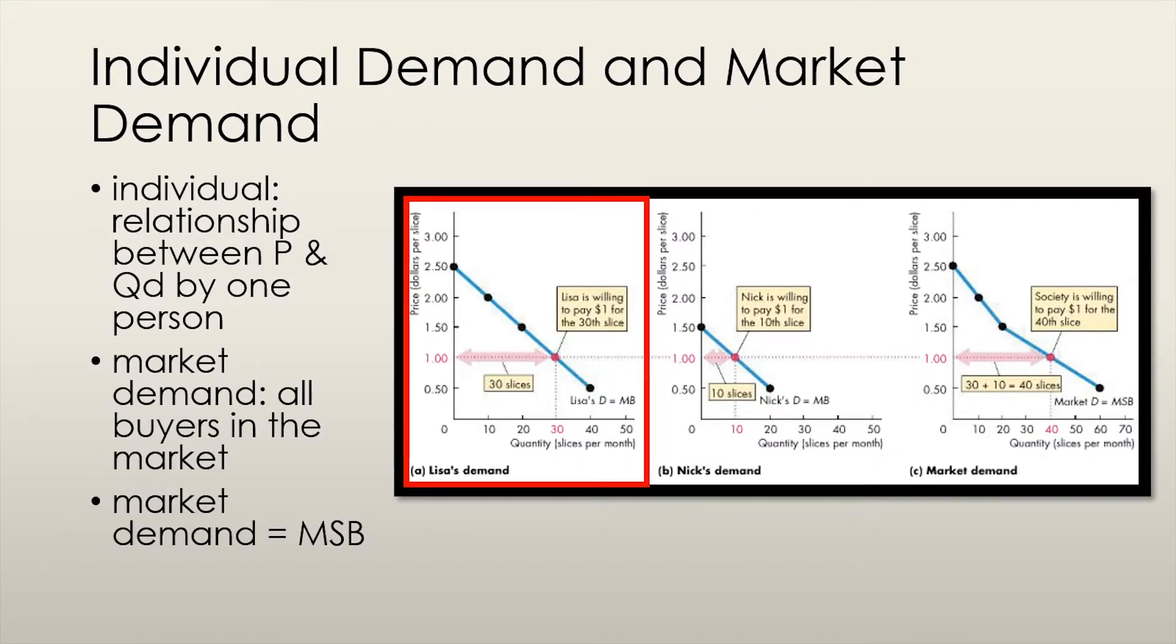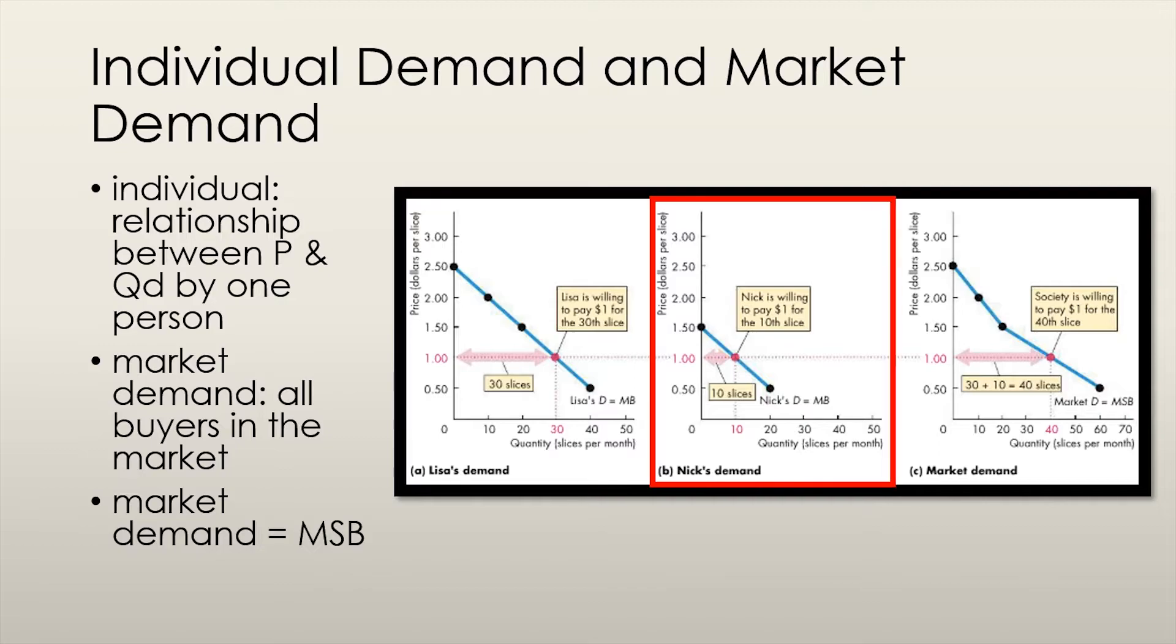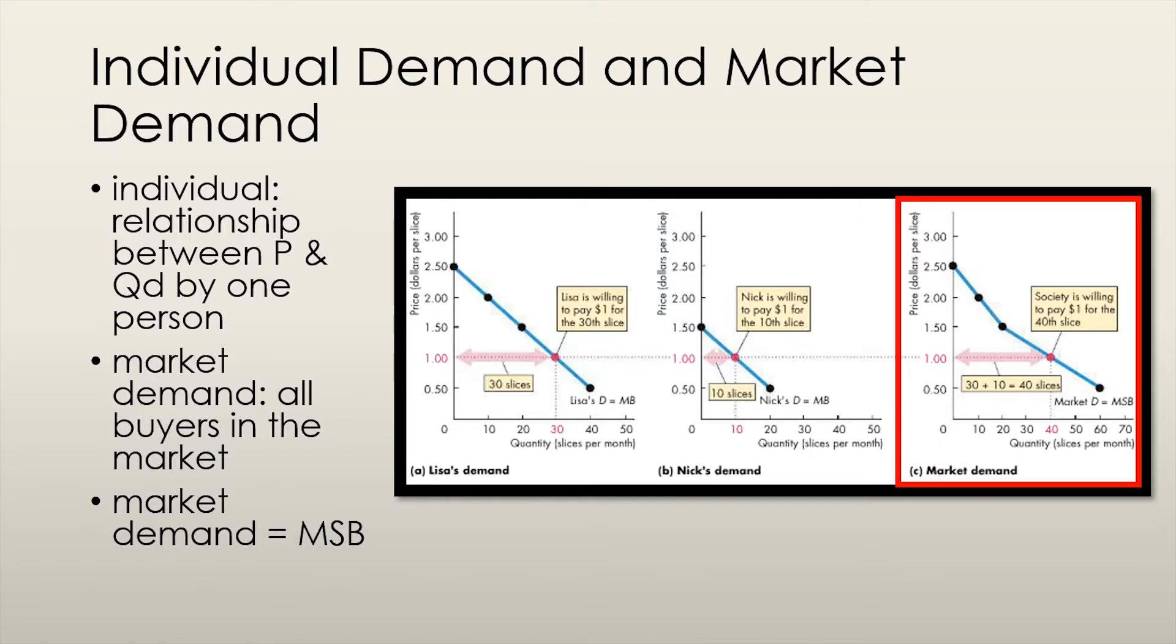Individual demand refers to the relationship between price and quantity demanded of a good or service by one person. Take the pizza example on the screen. Assume that this is a two-person market for pizza. Every point on the highlighted demand curve represents a price-quantity combination that Lisa would go for. Similarly, the second curve shows the quantities that Nick would demand given the prices. The market demand represents the combined quantities demanded by both Nick and Lisa, and we get the market demand by adding the quantities demanded at each price.